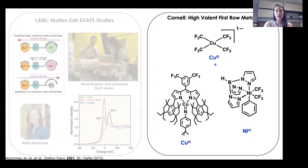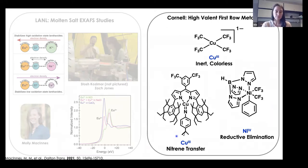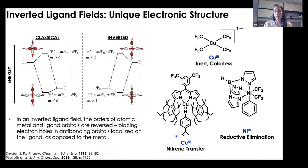I've shown here three formally high-valent species: two copper III complexes and one nickel IV complex. This copper tetrakis CF3 complex is inert and colorless, which might not be what you would expect for a formally D8 copper III species. The second copper III complex is competent for nitrene transfer, and this high-valent nickel IV complex is competent for reductive elimination. I'm hoping to show that we can explain these reactivities by invoking an inverted ligand field.